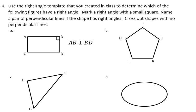In my last section, I need to identify perpendicular lines that make those right angles, if the shapes have perpendicular lines. The first one has been done for us. It says that line segment AB is perpendicular to BD.